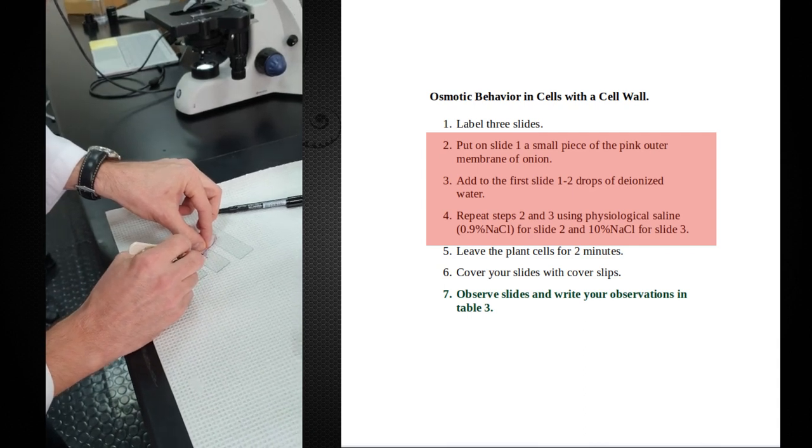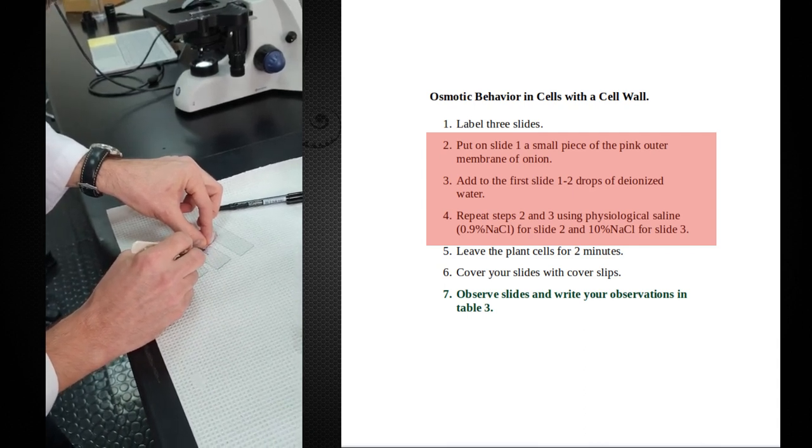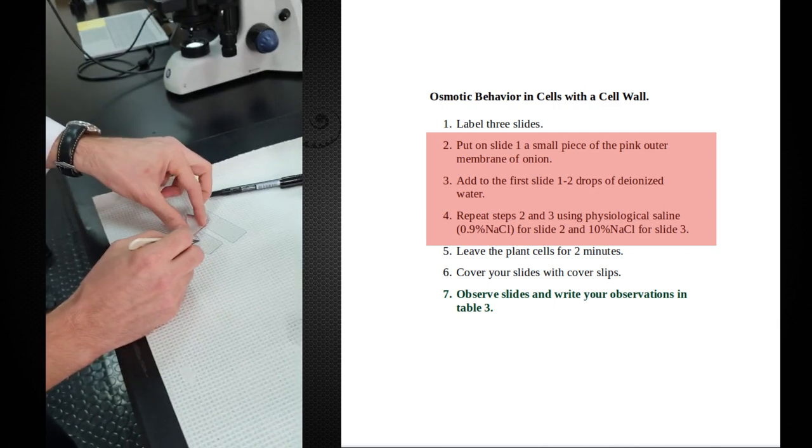And the key here is try to make sure that what you have is a relatively flat piece of onion. If you just pick the red part, it's a very thin membrane.